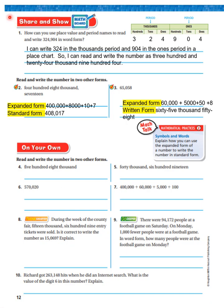Next page: how can you use place value and period names to read and write 324,904 in word form? I can write three hundred and twenty-four in the thousands period and nine hundred and four in the ones period. In a chart, I can read and write the number as three hundred and twenty-four thousand nine hundred and four.